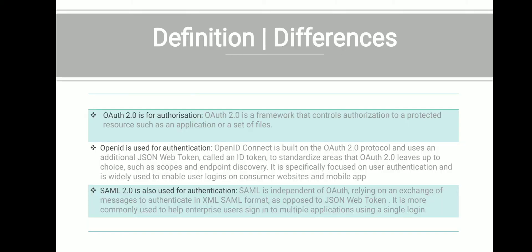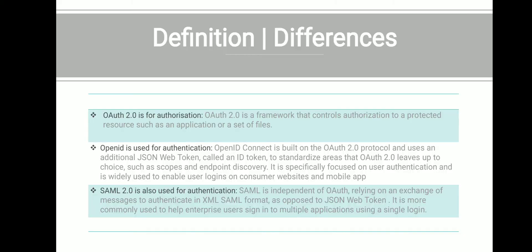SAML 2.0 is also used for authentication but it uses XML format, not JSON. It is more commonly used to help enterprise users sign in to multiple applications using a single sign-on approach within an organization. For federated authentication — such as for customers or partners logging into a system — OpenID Connect is used, because it is lightweight.